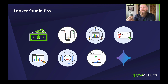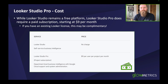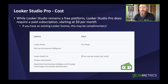Looker Studio Pro now has a lot of integration with Gemini, which is Google's AI tool to help you build reports and learn more about your data — and that's one of the big pushes for Looker Studio Pro. Looker Studio itself is completely free to use to start building reports once you've connected your data. Looker Studio Pro is a paid subscription starting at around nine dollars a month. If you already have a Looker license, this may already be included, so it's worth looking into that.